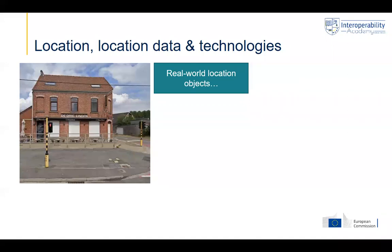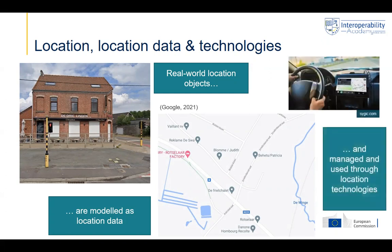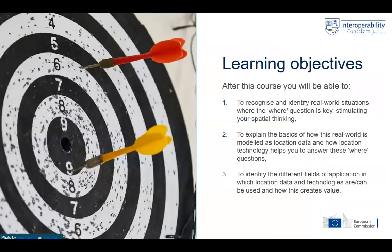Everything starts from a real-world location object — it might be a house, a shop, or a bar. This is then represented and modeled as location data, not only on typical maps but also on 3D maps. You will need technologies to manage and use this data, so-called location technologies — for example, GPS in cars.